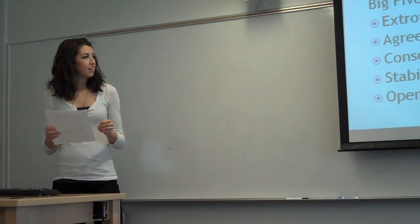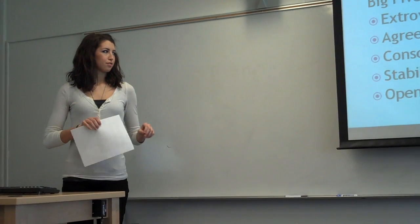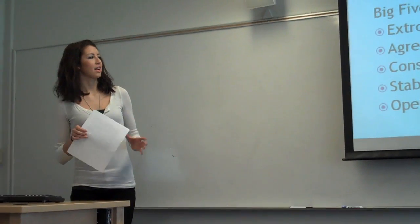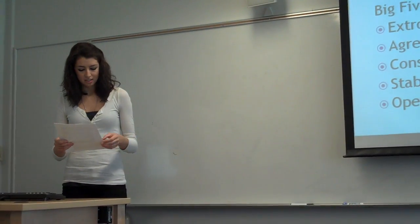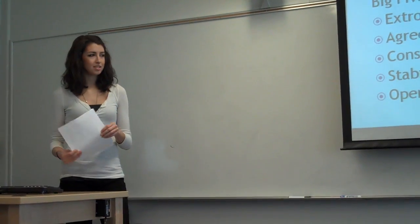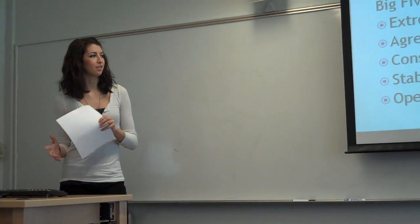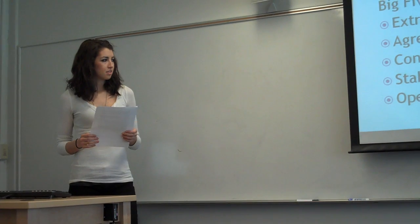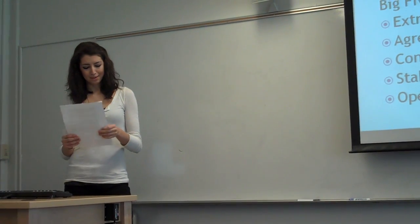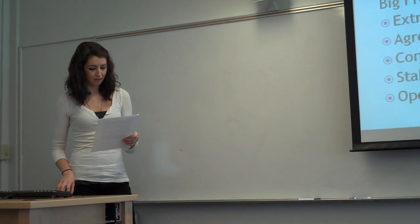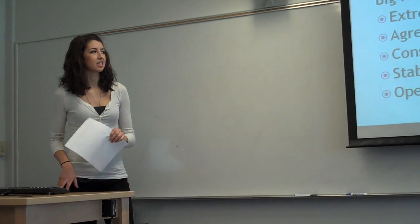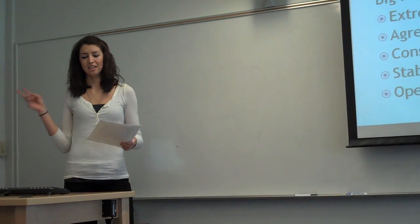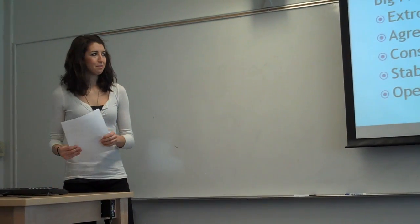The Big Five, I was an extrovert slightly on that scale. Agreeableness, I got a four, so I tend to be positive. I mesh well with others. Conscientiousness, I got a 4.6, which is my highest score. It says I'm achievement-oriented. I would say I'm a doer. I like getting things done. I'm pretty thorough.